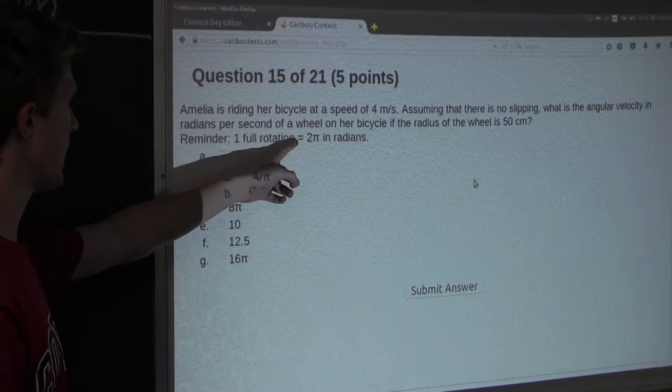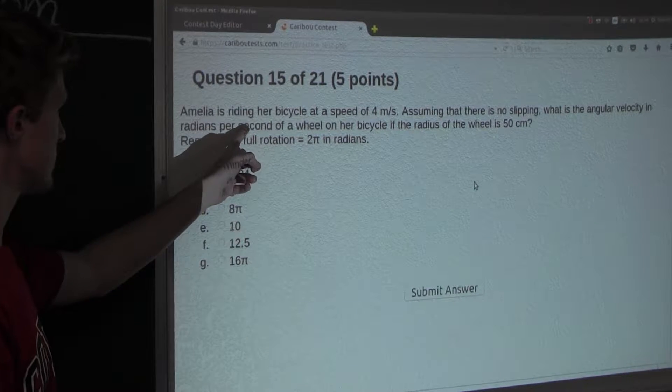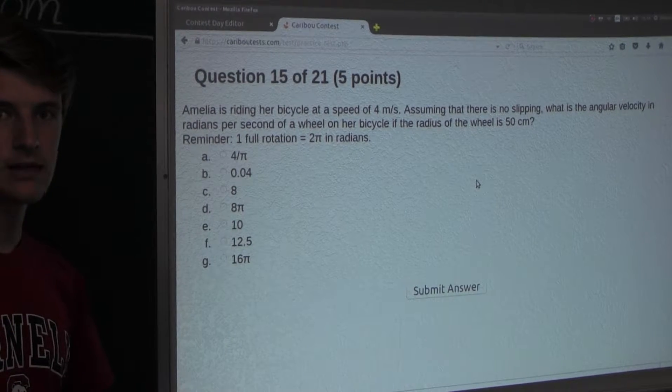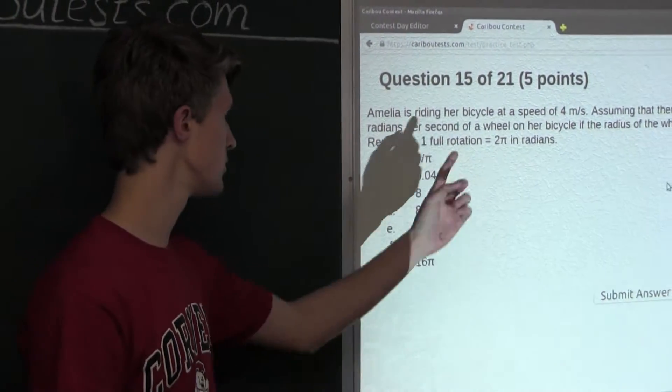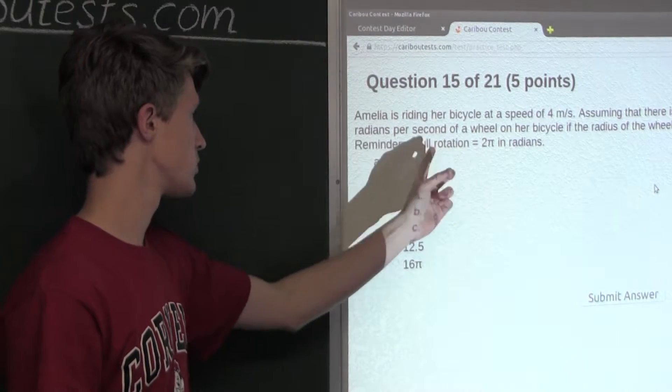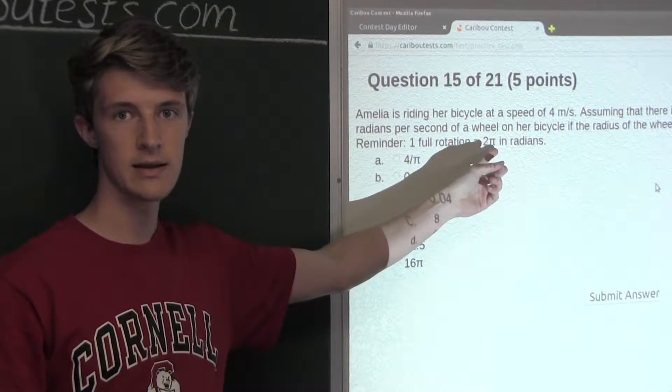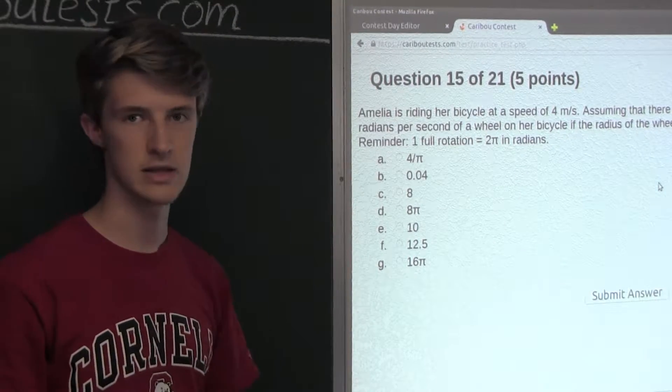Now, since we have that and we want to know the radians per second, that means that if we can find the number of rotations that the wheel makes per second, then we can multiply that by 2π, since one full rotation is equal to 2π, and then we would have our angular velocity in radians per second.